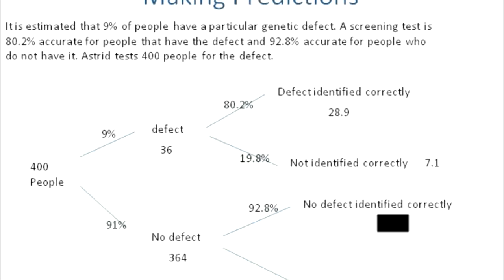I can also work out any of the other branches. The 364 that don't have the defect — the ones identified correctly is 364 times 92.8%, which gives approximately 338. The quiz asks questions like this, so the easiest way is to draw a tree, put everything from the question on it, work out the percentages, and you should be able to do it.